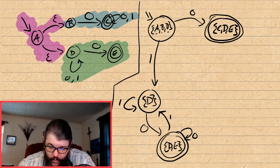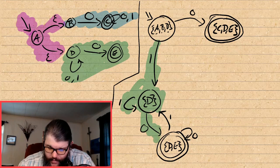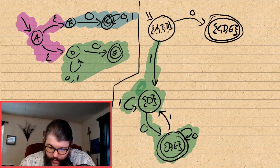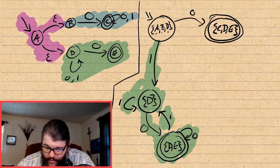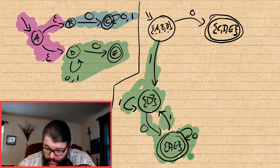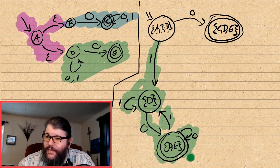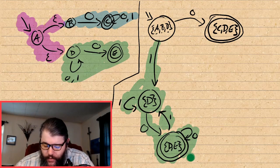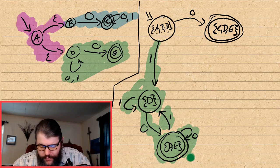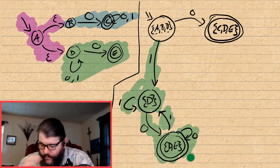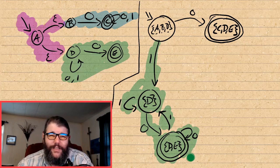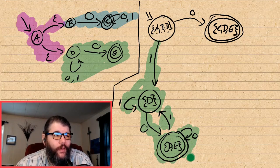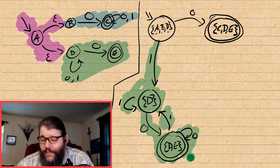If we're in state {D, E} and we see a 0, D goes to itself or E on a 0, so we stay in {D, E}. If we see a 1, E falls off but D goes back to itself, so there's a transition back to state {D} on a 1. This bottom portion of the machine describes any string that begins with a 1 and ends with a 0.